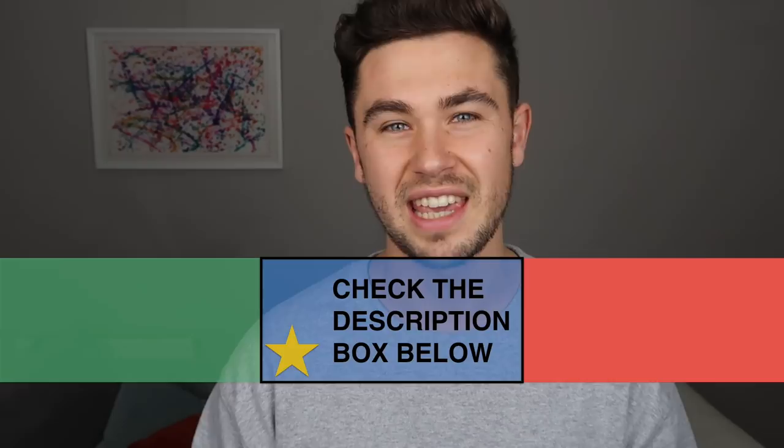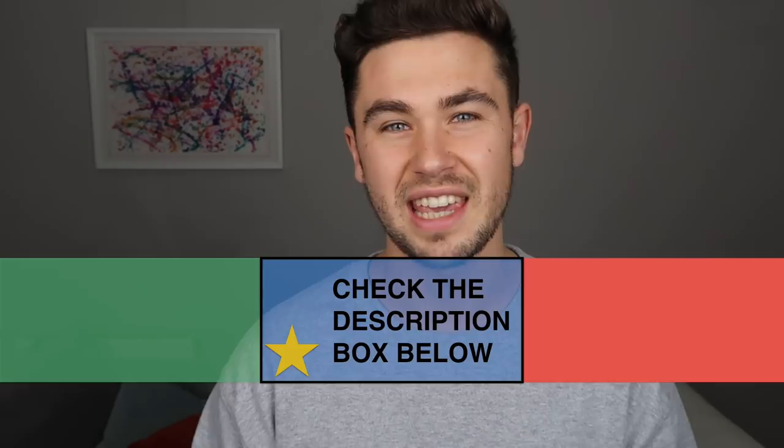Throughout this video, keep an eye on the timeline which we have put below, because this indicates the tense that we are using in our conversation and the changes we make between those tenses. Also, you will see that a gold star will appear occasionally — this gold star appears when we use a grammar tense in a less common or irregular way, so you can check the description for each example.